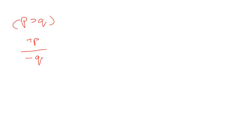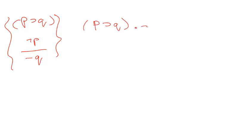Let's look at how we would demonstrate validity with the truth table. What we'd do for truth tables is join the premises with a conjunction — an AND — and then connect the premises to the conclusion with a horseshoe, then run the truth table for all of this.